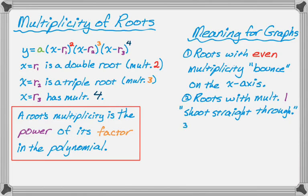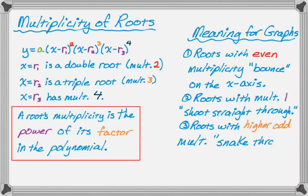The last case could be roots with a higher odd power, so 3rd degree, 25th degree, anything odd, an odd multiplicity that's not 1. I'm going to say that they snake through, so it changes shape there. It would shoot right through if it was 1, but it's not 1, so it's going to snake a little bit.